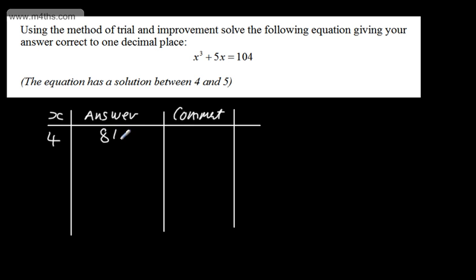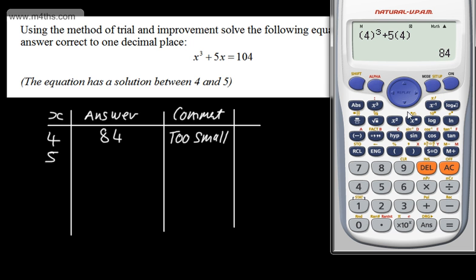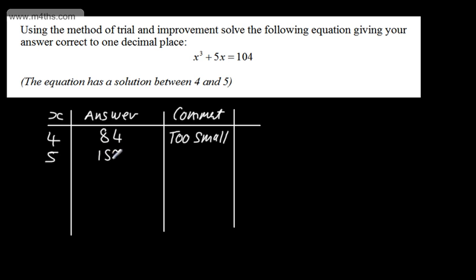84 is less than 104, so the comment is that 4 is too small. I'm now going to test 5. As expected, 5 will be too big, and we can see that the solution is between these two values. Substituting 5 into the calculator gives us 150, so the comment is that 5 is too big. The fact that one is too small and one is too big tells us that the answer is somewhere between 4 and 5.